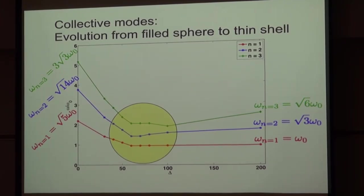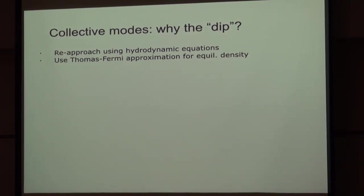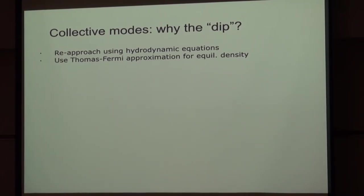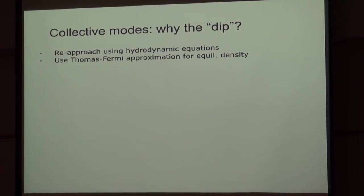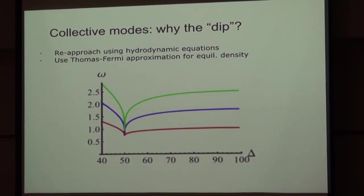We thought we must have done something wrong — let's use a different method and see if we get the same answer. A well-tested way of theoretically looking for collective modes is to employ hydrodynamic equations — basically a version of the GP equation that treats it like a fluid. We re-approached this as a hydrodynamic equation problem, which ends up as an eigenvalue equation for the collective modes. You have to figure out the equilibrium density, and because we were in the strong interaction limit throughout, we used the Thomas-Fermi approximation for the equilibrium density. When we did that, we got essentially the same basic plot — and the dip got way worse. So we thought: maybe the dip is real.